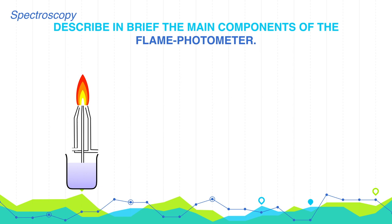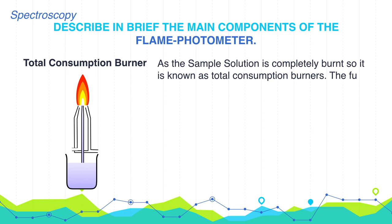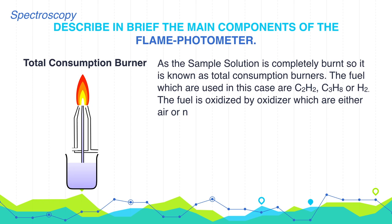Let's talk about total consumption burner. As the sample solution is completely burnt, it is known as total consumption burner. The fuels used in this case are acetylene, propylene, or hydrogen. The fuel is oxidized by oxidizer which are either air or nitrous oxide or oxygen diluted with nitrogen.